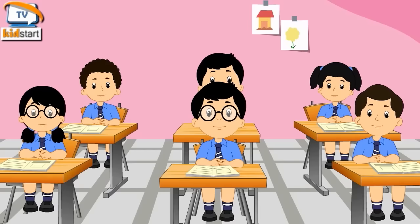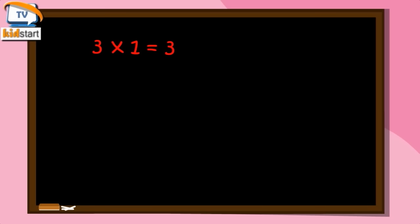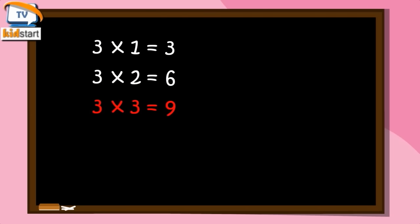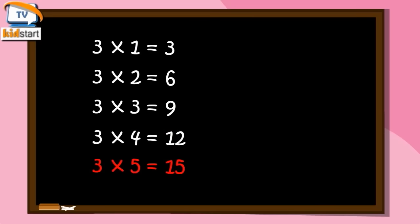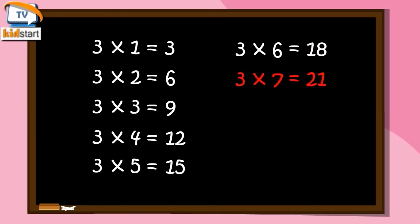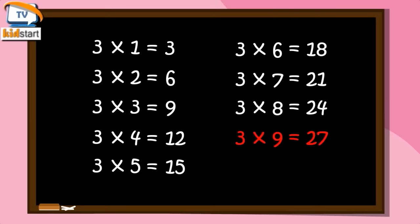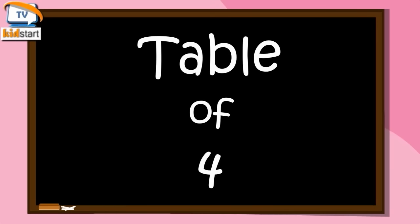Three ones are three. Three twos are six. Three threes are nine. Three fours are twelve. Three fives are fifteen. Three sixes are eighteen. Three sevens are twenty-one. Three eights are twenty-four. Three nines are twenty-seven. Three tens are thirty.